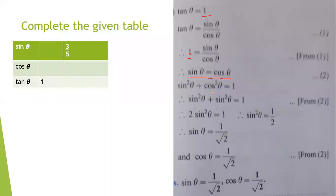Yesterday we did the identity sin square theta plus cos square theta equal to one. Now using equation two, since sin theta equals cos theta, in place of cos square theta we will write sin square theta. So we get sin square theta plus sin square theta equal to one. That is two times sin square theta equal to one. We will number this from two.